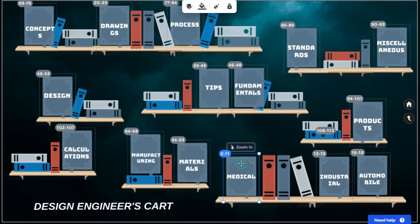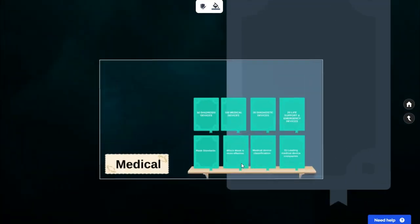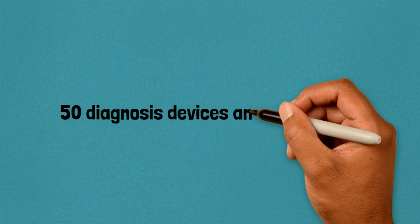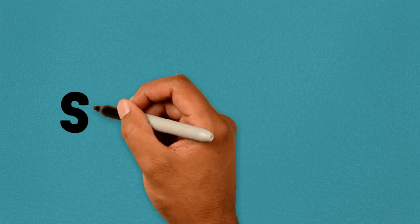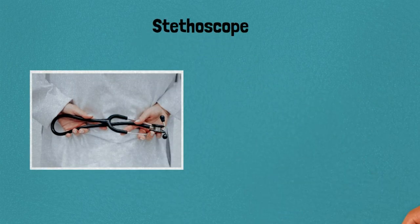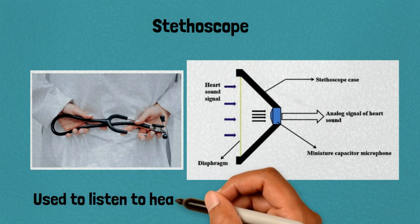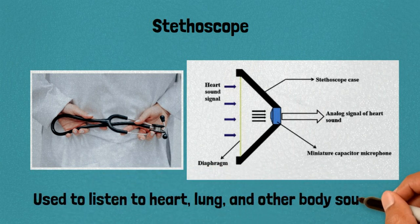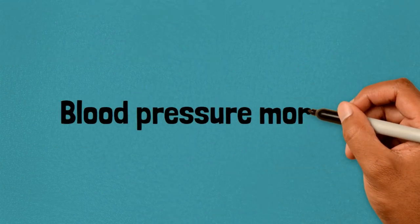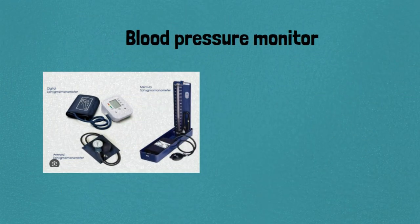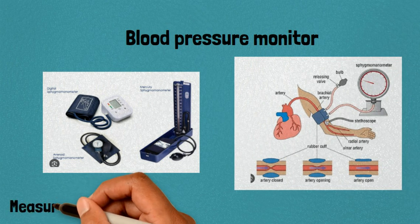Welcome to Design Engineers Cart. Here are 50 commonly used medical equipment for diagnosis and their usage. 1. Stethoscope: used to listen to heart, lung, and other body sounds. 2. Blood pressure monitor: measures blood pressure to assess cardiovascular health.